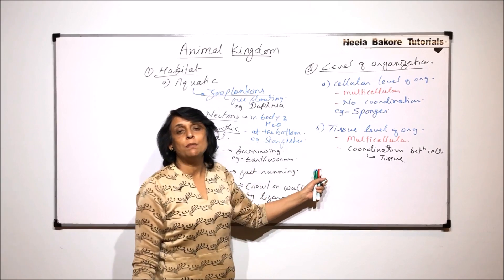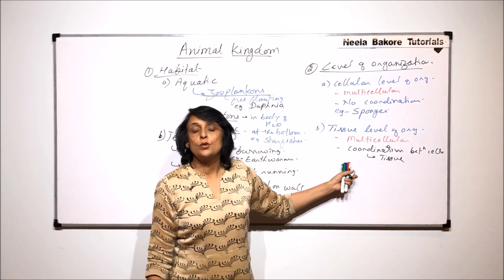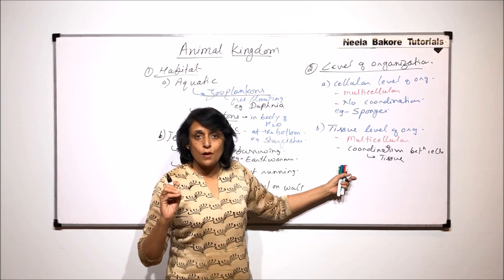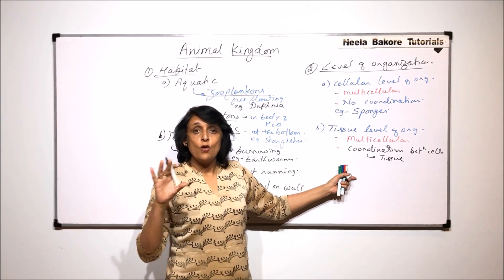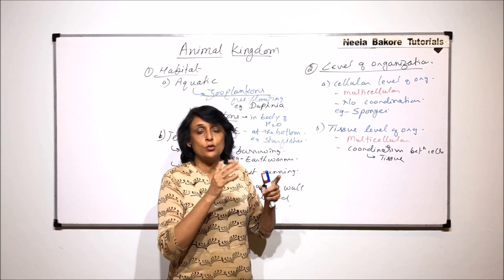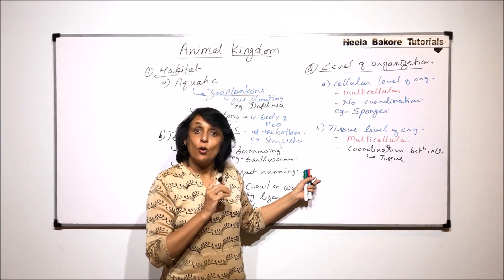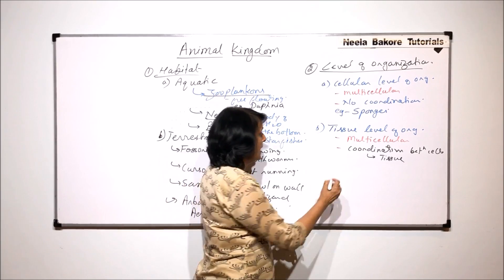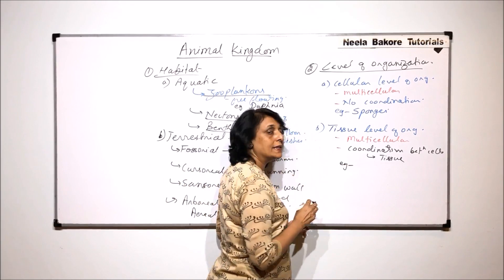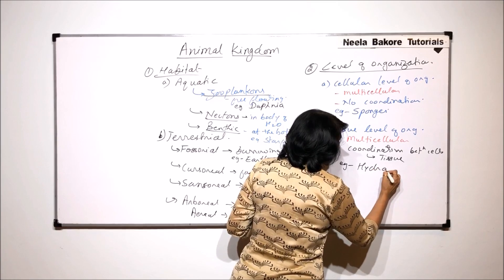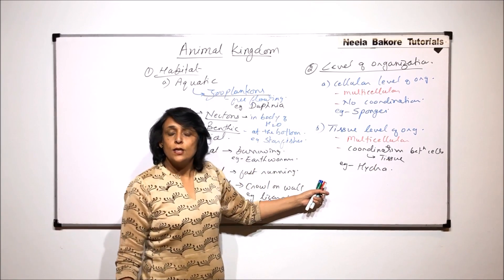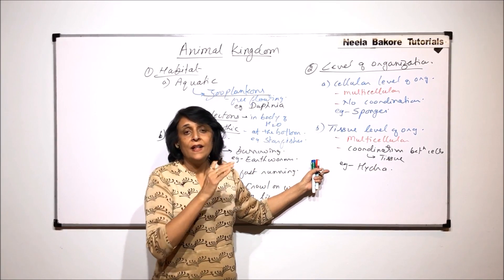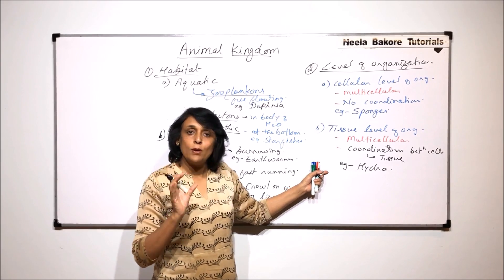Tissue means it can be epithelial tissue, nervous tissue, connective tissue. So those kind of tissues are formed. But there is no further organization. That means tissues are not combined or coordinating to form any organ. That we will see in the third level. Here the example that we can take is of hydra. So they have tissues but there is no coordination to form an organ.